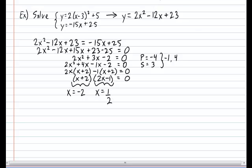Next, I'm going to plug both x's back into either of the original rules. Again, to keep things simple, might as well just use the linear rule. So for the first x, I get y is equal to negative 15 times negative 2 plus 25, thereby giving me a y value of 55.